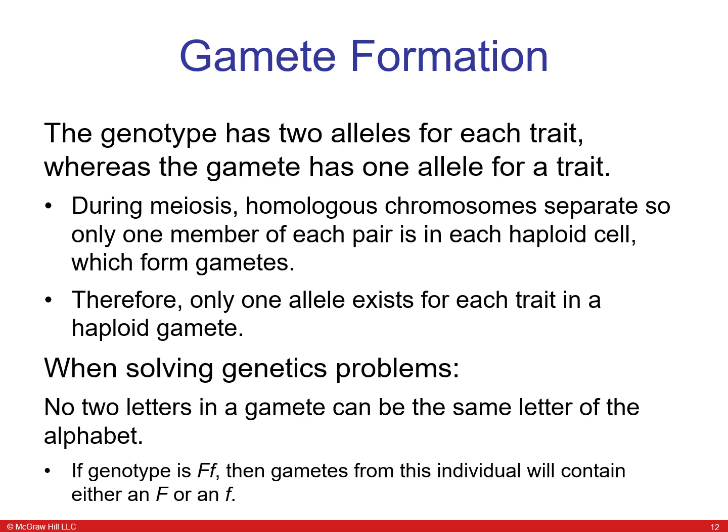The genotype has two alleles for each trait, while each gamete has one allele. During meiosis, homologous chromosomes separate so one member of each pair is in each haploid cell, forming gametes. Therefore only one allele exists for each trait in a haploid gamete — no two letters in a gamete can be the same letter of the alphabet.